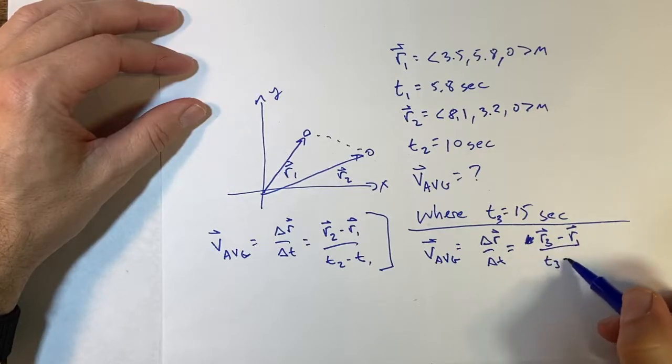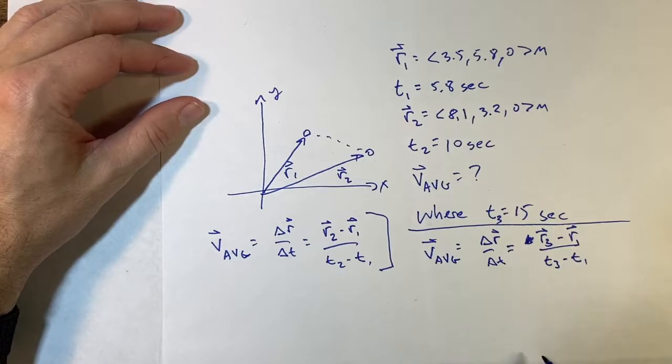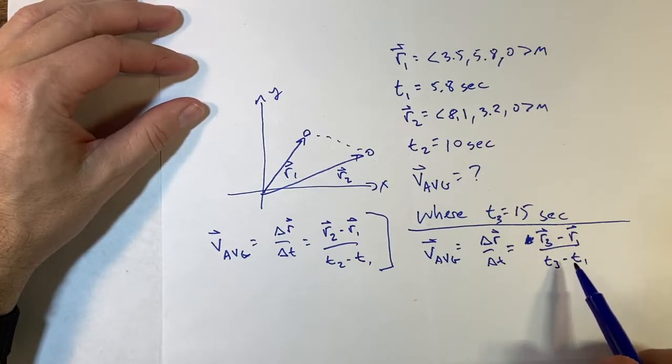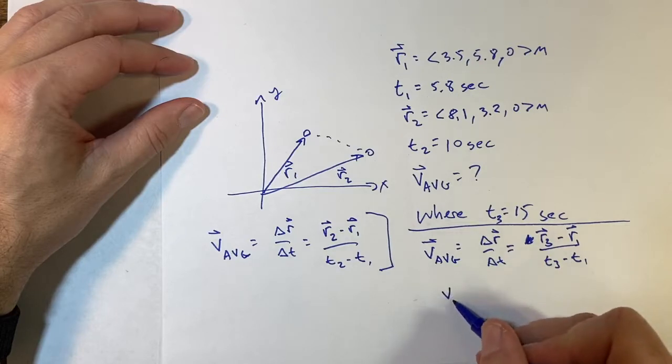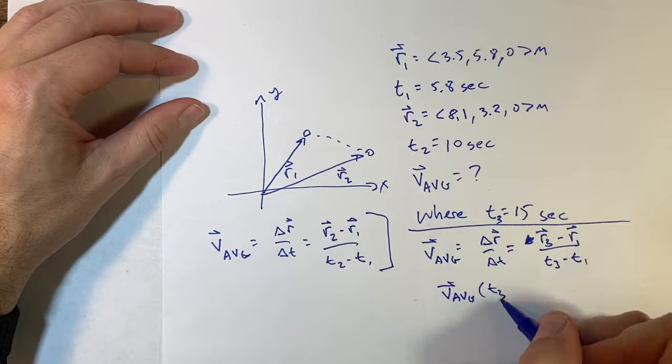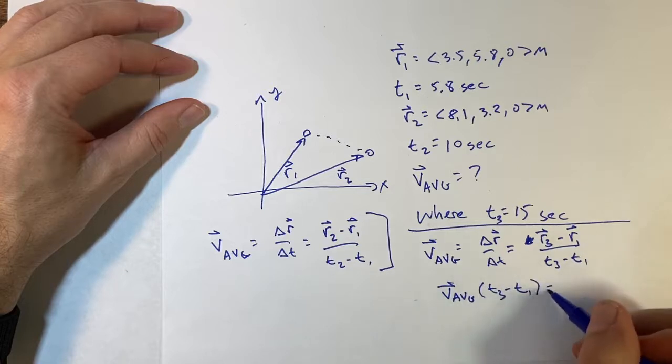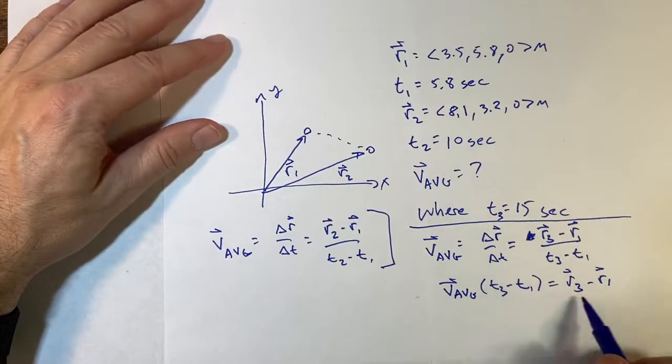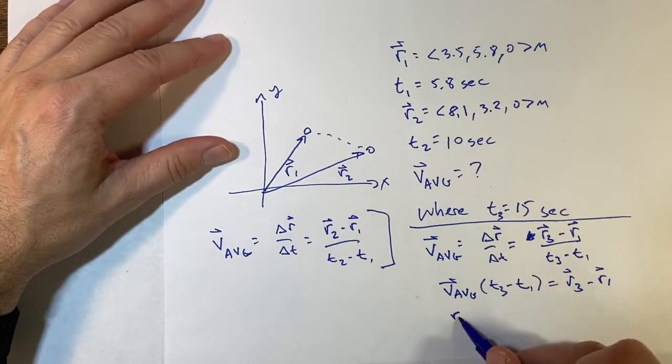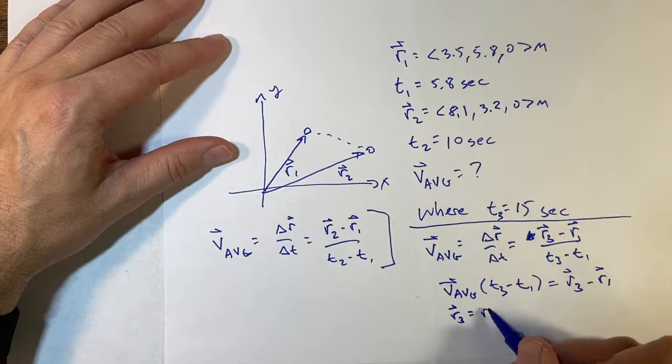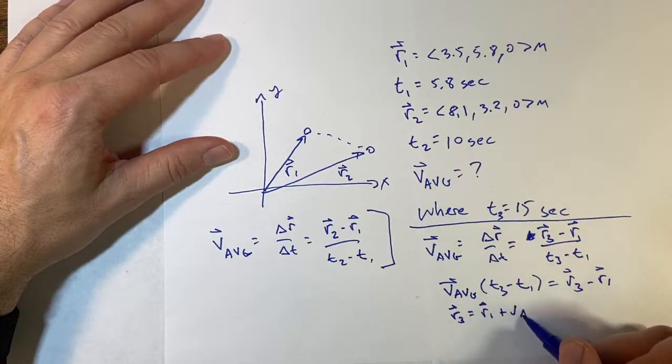Now if I multiply both sides by t3 minus t1, I get v average times t3 minus t1 equals r3 minus r1. Now I want to solve for r3, so I add r1 to both sides. I get r3 equals r1 plus v average times delta t, t3 minus t1.